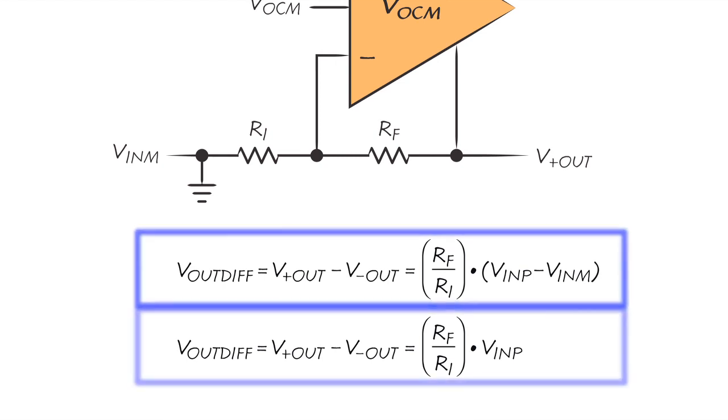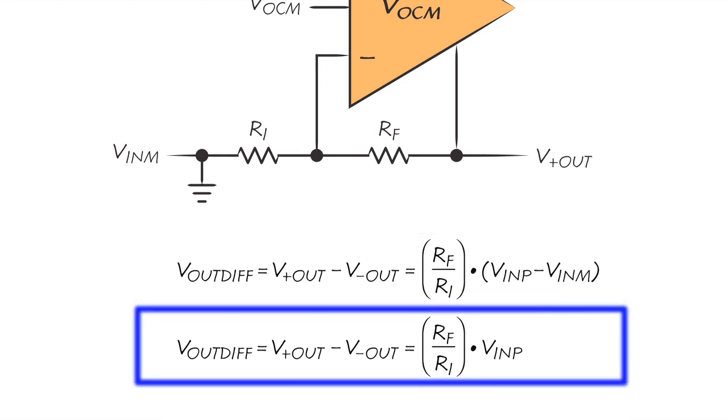We often use the circuit as follows. We ground one of the inputs and apply our regular single-ended signal to the other input. Then, we see that the op-amp creates a differential voltage at the output, proportional to the single-ended input voltage. That is, a single-ended to differential conversion.